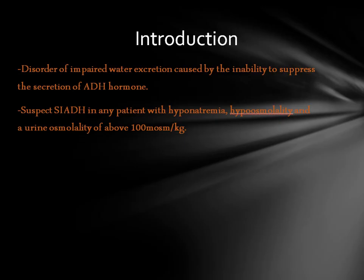You suspect SIADH in any patient who has hyponatremia with hypo-osmolality — that is, the serum osmolality is low. Normal serum osmolality is between 275 to 295 (or 285 to 295), and anything below that is hypo-osmolar. A urine osmolality above 100 mOsm is needed, though a urine osmolality just over 100 is not necessarily diagnostic of SIADH, because urine osmolality changes with serum osmolality. In general, you suspect SIADH based on hyponatremia, hypo-osmolality, and urine osmolality above 100.